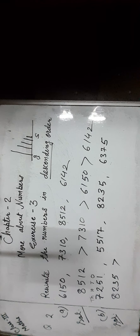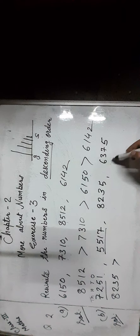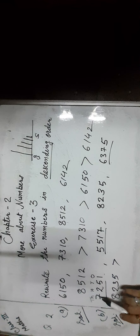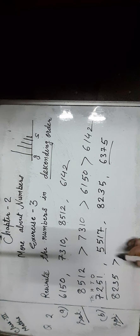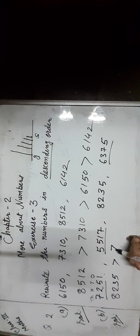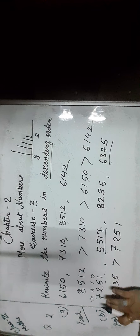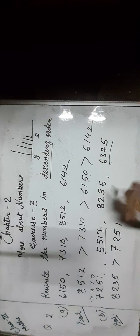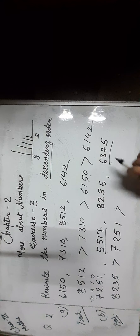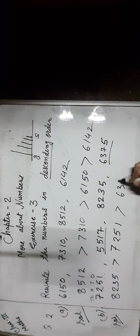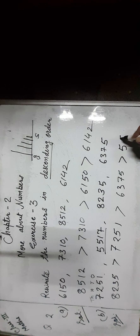Now compare the remaining digits. As you can see, 7 is greater than 5 and 6, so we write 7,251. Now compare the remaining digits: 6 is greater than 5, so we move with 6,375. Then at last we write 5,570.